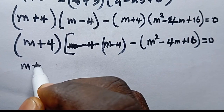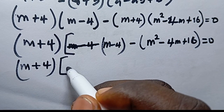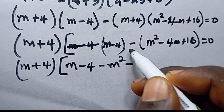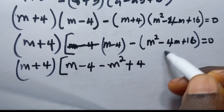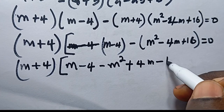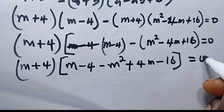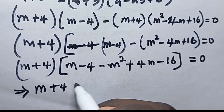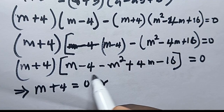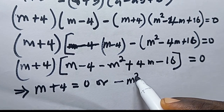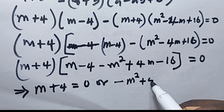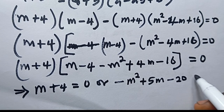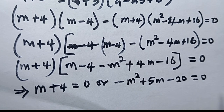Simplifying what's inside the bracket: (m + 4) times (m + 4), opening the bracket for (m − 4) gives minus m squared, then minus times minus is plus 4m, then minus 16. Combining terms: the m² terms give minus m², the m terms give minus 4m plus 4m which is 0, and the constants give minus 16. Wait — combining the constants: −4 and −16 gives −20. So this equals 0.